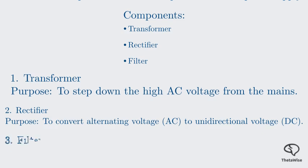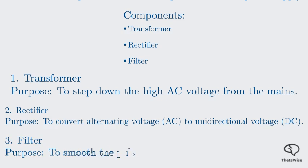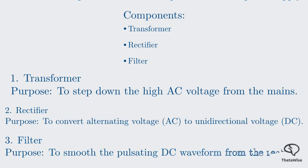Finally, we have the filter. Remember how the rectifier gave us a pulsating DC? The filter's job is to smooth out these pulsations. It's a circuit designed to smooth the DC waveform, making it resemble a nearly flat line, which is what we need for most electronic applications. To recap: the transformer reduces the AC voltage, the rectifier converts that AC to pulsating DC, and the filter smooths that pulsating DC into a much more stable, usable DC voltage.